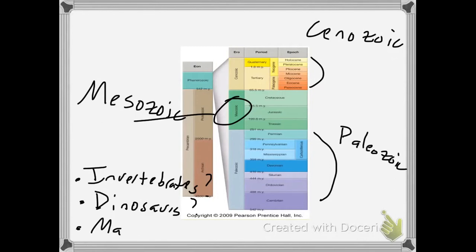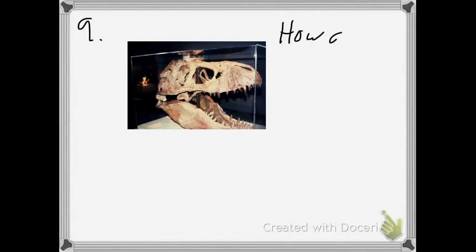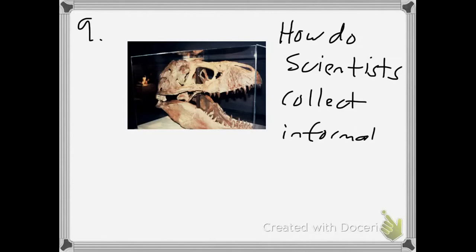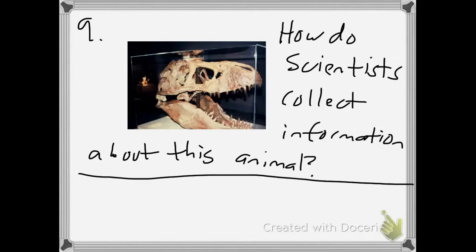Question number nine: let's say that an aspiring geologist or even a common Joe perhaps would happen upon this fellow. So how do scientists collect information about this animal that's pictured here? Of course, this animal that's pictured is a dinosaur, it's a fossil, but this little discussion can apply to even living animals.